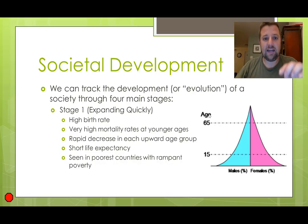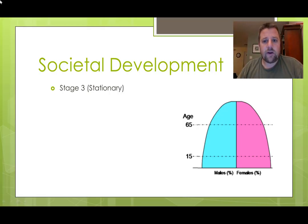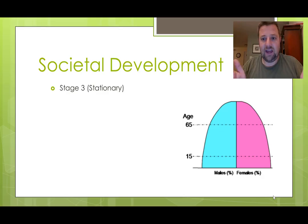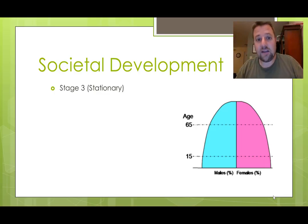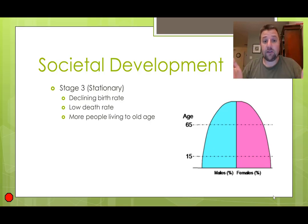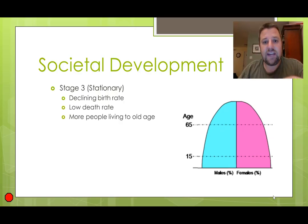In stage three, the younger generations are stabilizing in size — you have roughly the same number of children being born every year. Naturally there's always some death at all ages, so those lines are tilted in just a little bit. But the lines are pretty steep, meaning death rate is low until you get pretty old — there are a lot of people living to old age, and maybe around 70, 80, 90 years old is when many of them start to die off. This is considered to be a stationary population.